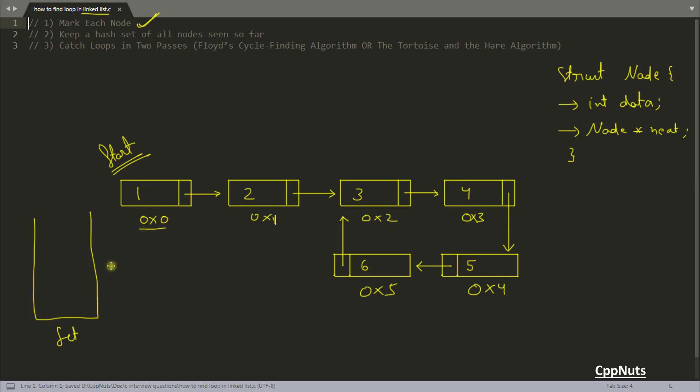We'll store the address. Before storing the address we will find whether this address already exists in this set or not. So if it doesn't exist we will store that address and we'll go further. Store this one because this doesn't exist, so first you will find inside this set and if it doesn't exist you will store that and move further. So this one then 0x2, again 0x3, 0x4, 0x5.